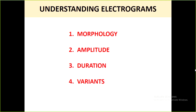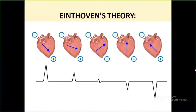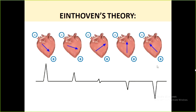Regarding morphology: going back to Einthoven's law — when an impulse goes towards the positive electrode of the recording electrode, it records a positive deflection (prominent R-wave). If going at an angle towards the positive electrode, a positive but smaller deflection. If the impulse direction is perpendicular, you get a biphasic electrogram. If going opposite — a negative electrogram. If going exactly away from the recording positive electrode, a prominent QS or prominent negative deflection is recorded.